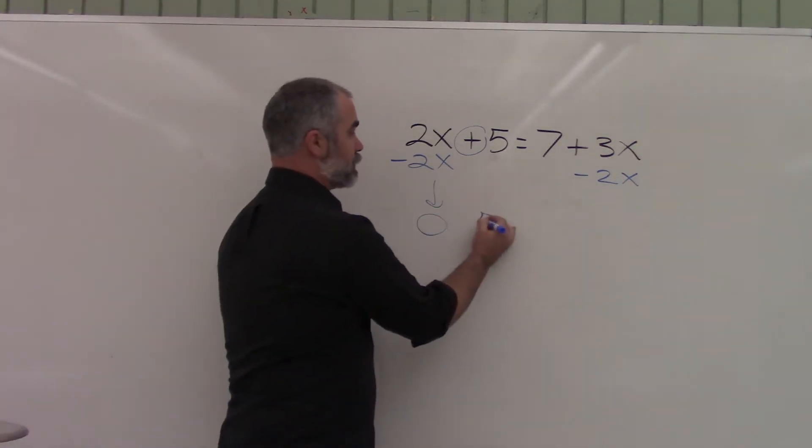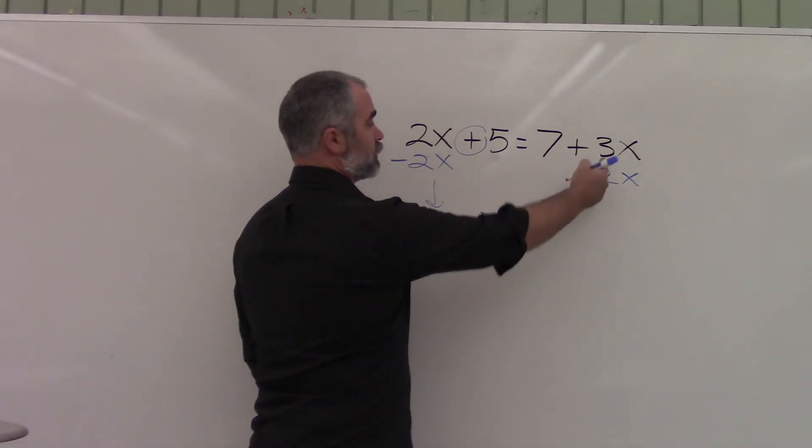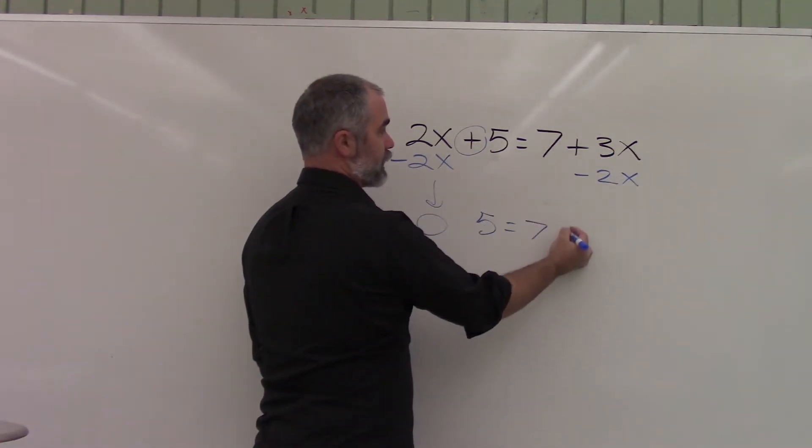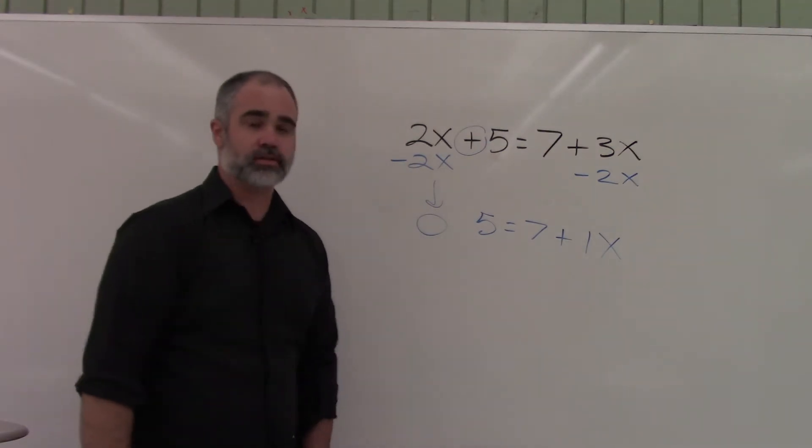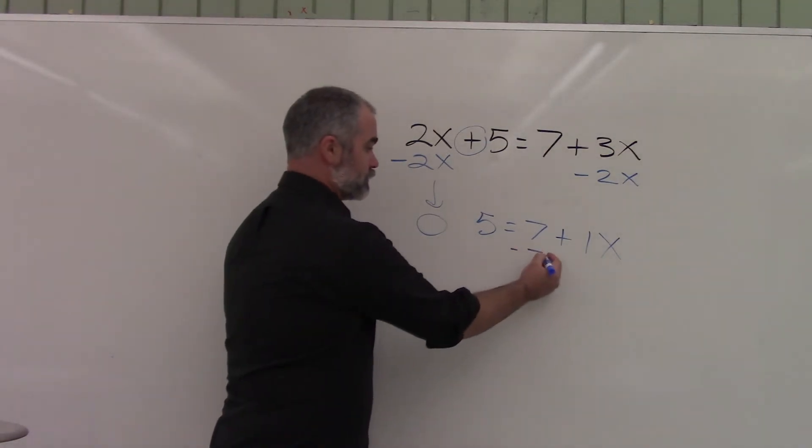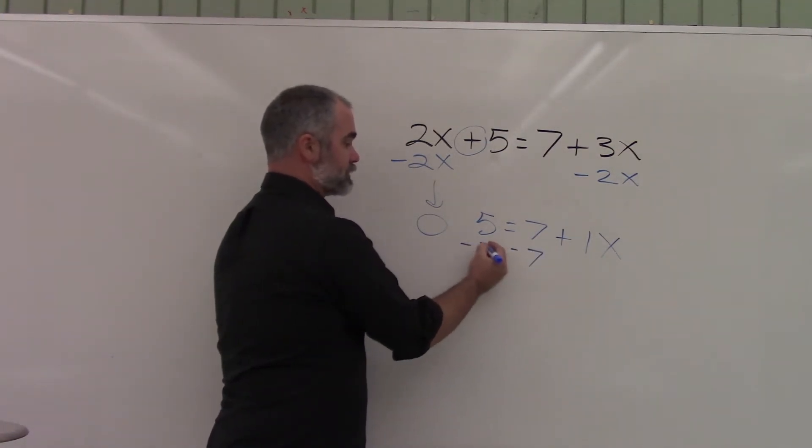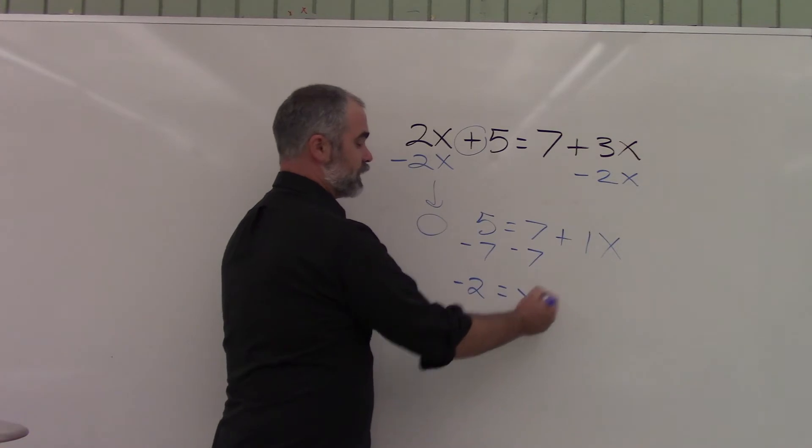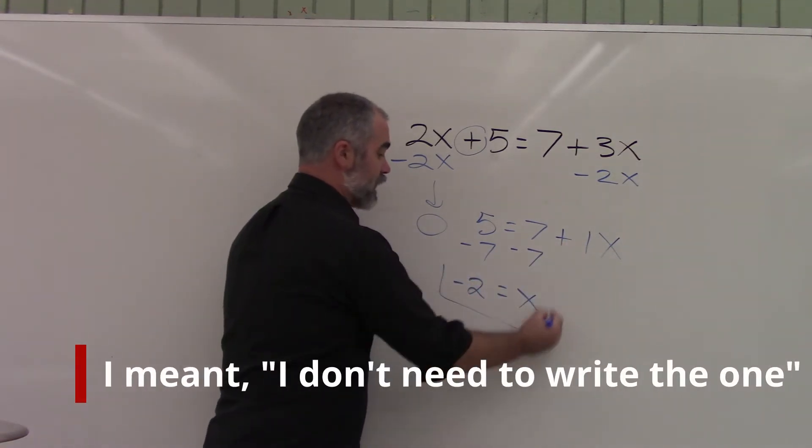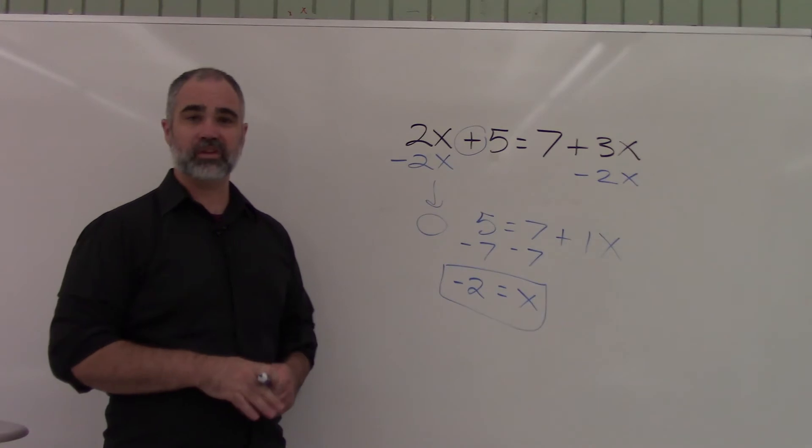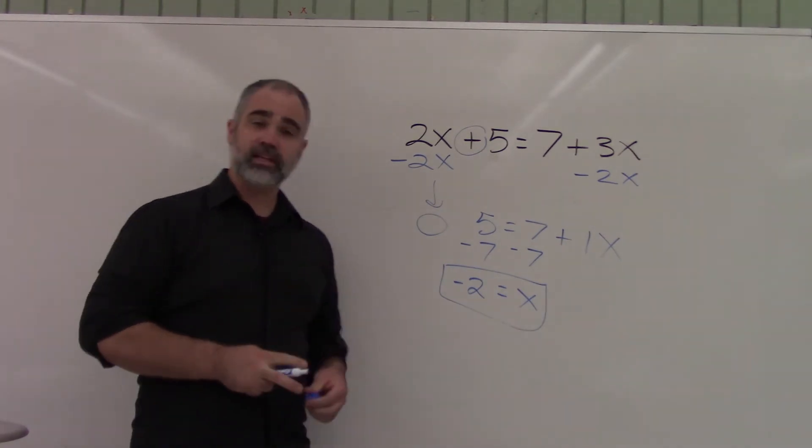Now I'm left with 5 equals 7. 3x minus 2x. That's 1x. I've got a very easy question now. Do the opposite of adding 7. That's minusing 7. And I end up with 5 minus 7. That's negative 2. And I don't need to write my x. It doesn't matter if your x is on the right or the left. It's totally fine.